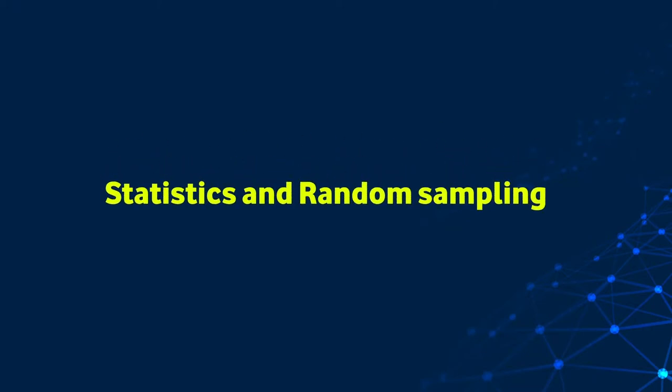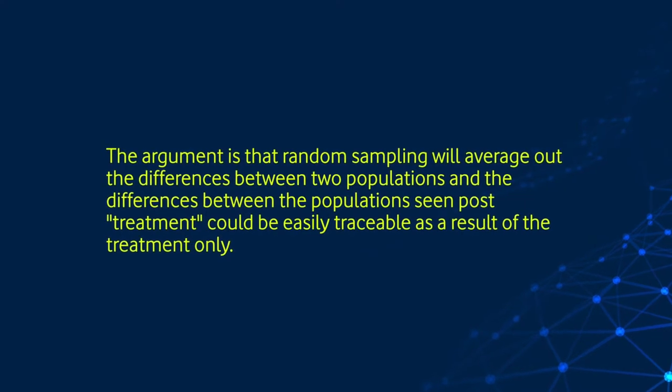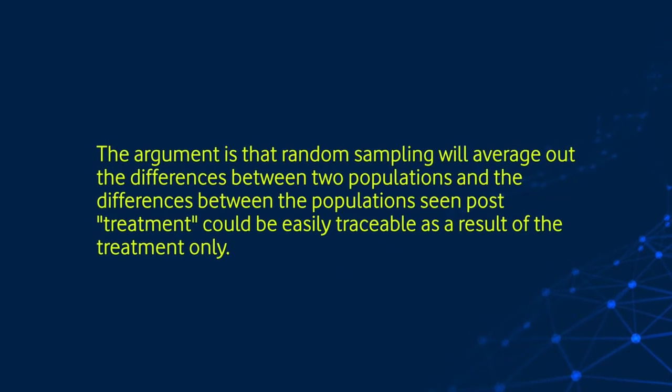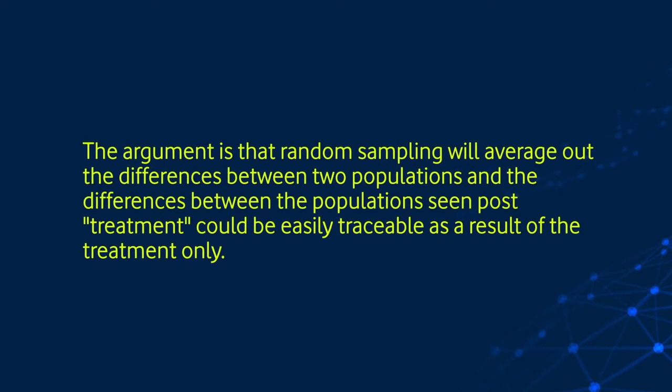We are going to talk more about sampling and hypotheses. Random sampling and statistics is a very routine affair — statistics derives its power from random sampling. The argument is that random sampling will average out differences between two populations, and differences seen post-treatment could be traced as a result of the treatment only. However, even with the same populations we can't be sure whether results are rare or actually significant regularly occurring events.